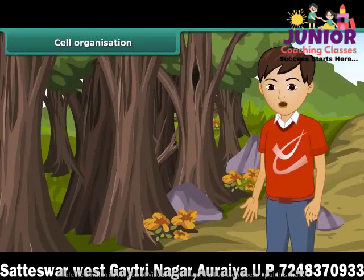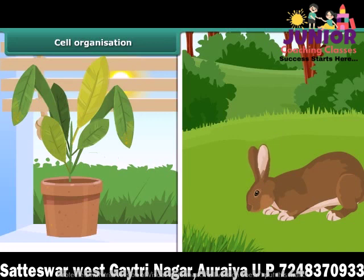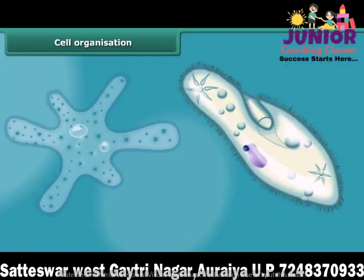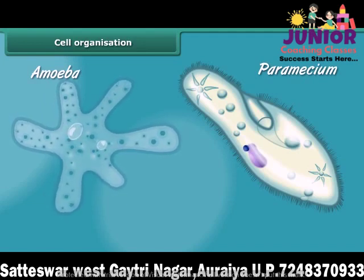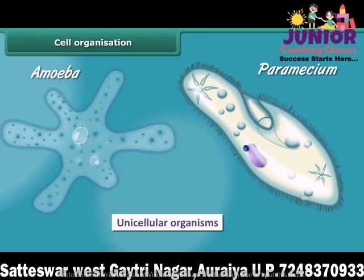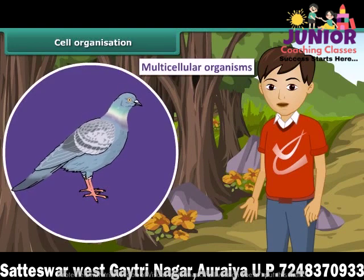An important characteristic that differentiates living organisms from non-living things is that all living organisms — plants or animals — are comprised of cells. They may be unicellular or multicellular depending on the number of cells in their body. Small organisms like amoeba and paramecium are made up of one cell; they are called unicellular organisms. Human beings, pigeons, and mango trees are made up of many cells, so they are called multicellular organisms.